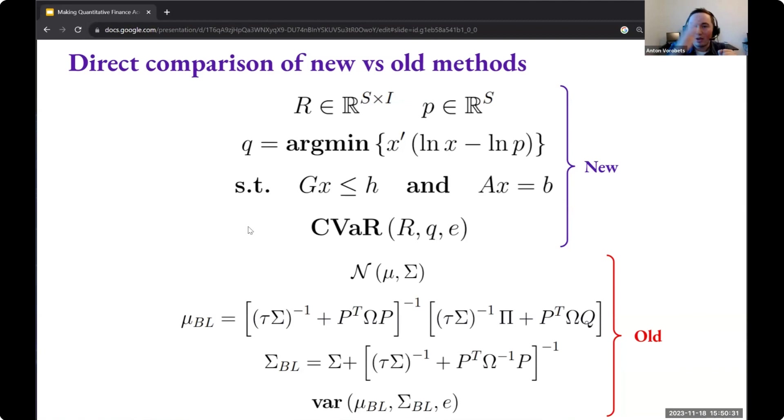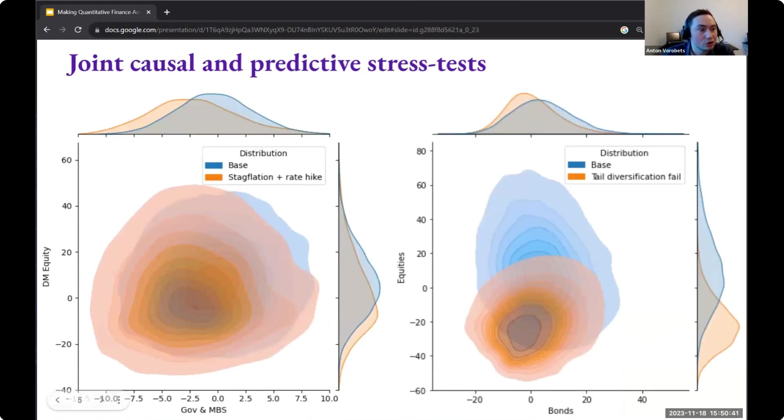But of course, in all other cases where you have distributions that are closer to real world markets, CVaR will give you much more meaningful results than variance. So here, you just see some visual examples of some of the things that you can do with this new framework. So on the left side, you see a view or stress test that we have implemented where you have stagflation and a rate hike.